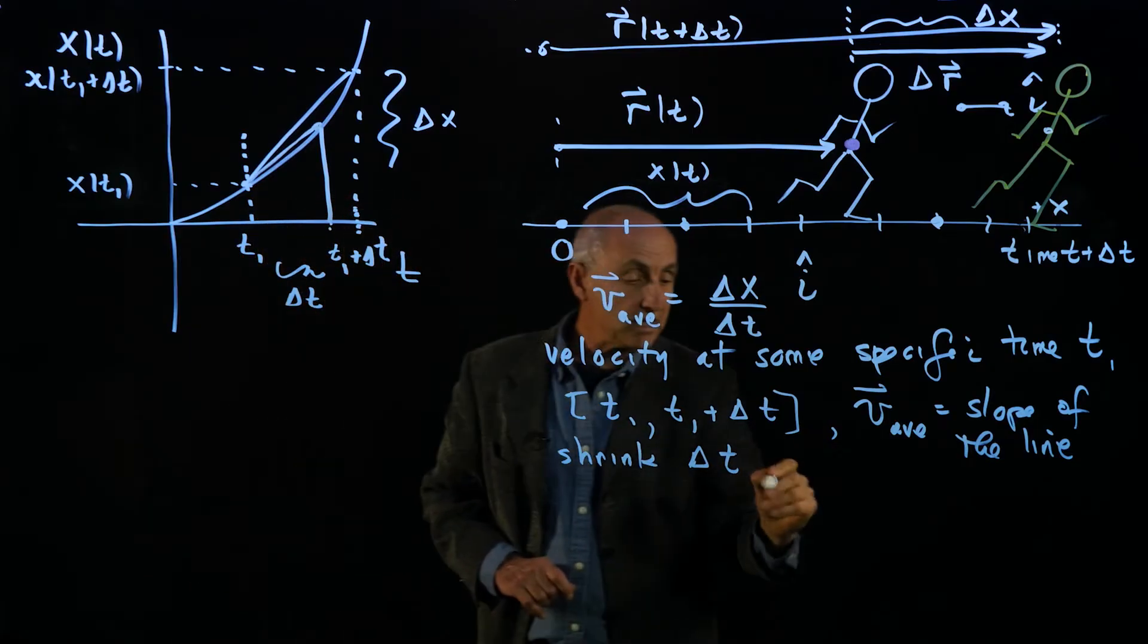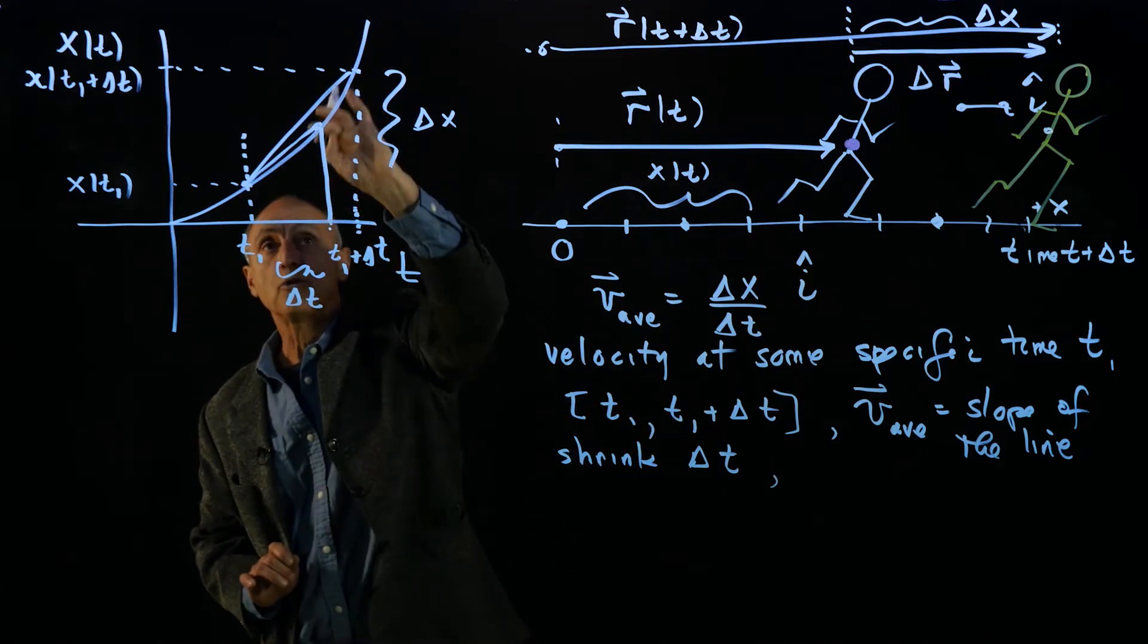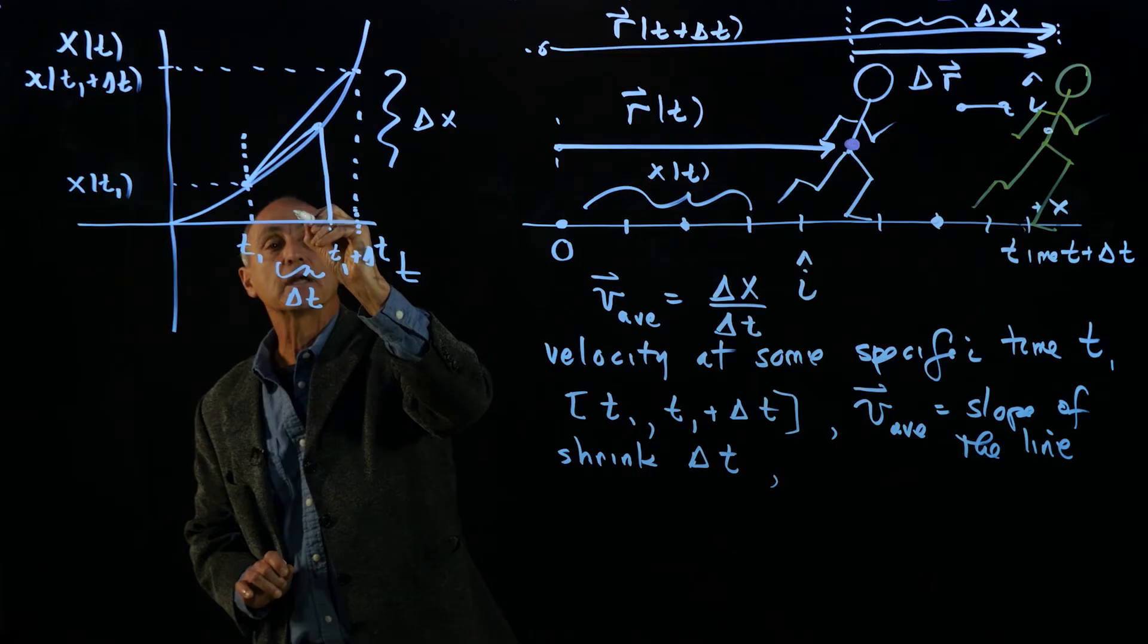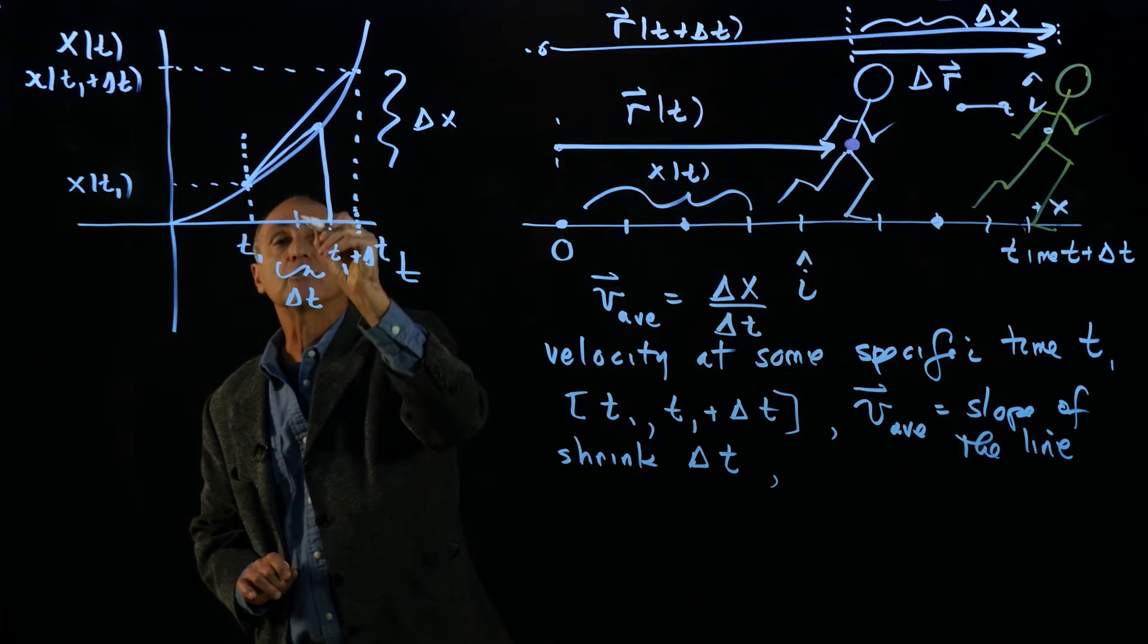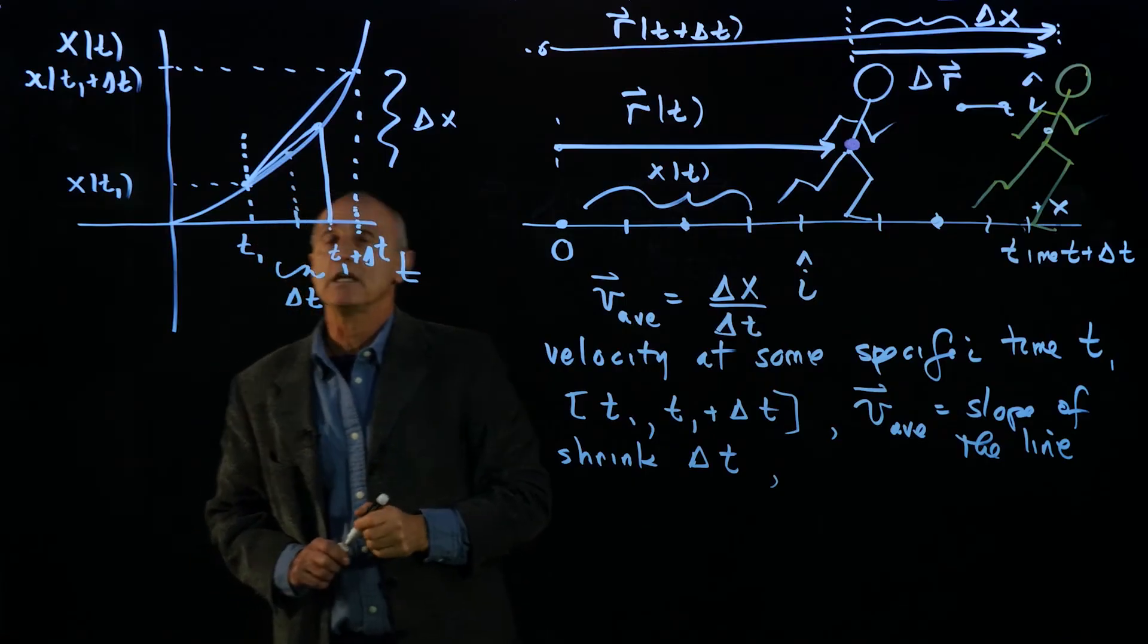So for instance, suppose we have a smaller delta t and we draw that line. And then our average velocity represents that slope. And again, we keep on taking a limit. So now we have another slope. So we have one slope, two slopes. And now we shrink again to a new delta t. And you can see that the slope is changing.